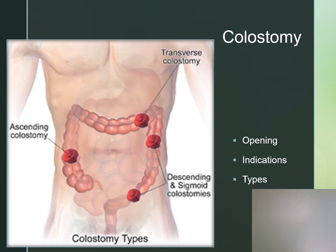With the loop colostomy, a loop of bowel is lifted and supported with a glass rod or plastic butterfly device. The opening of the intestinal loop lacks pain receptors, which protects the bed and the client's clothing when the loop colostomy is opened. The client should be prepared for the pungent odor of the fecal material, as these are extremely odorous.